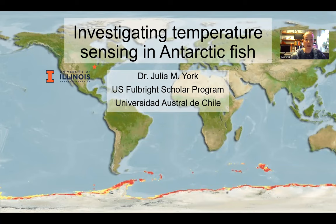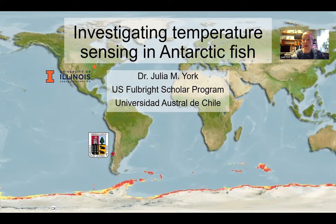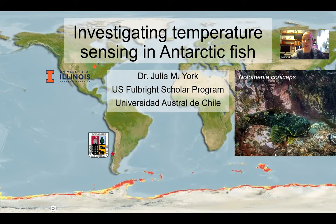I'll be conducting this project at the Universidad Austral de Chile in Valdivia. Here, I'm showing you a map of the range of one of the fish that I'm interested in studying. You can see here in red and yellow where the fish occurs all around the coast of Antarctica. This fish is Notothenia coraceps, this lovely guy here.